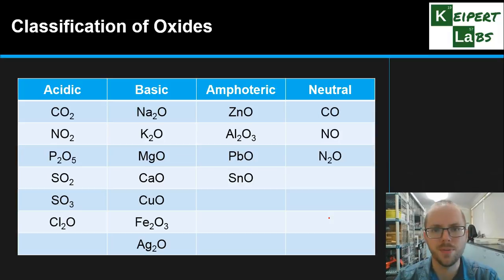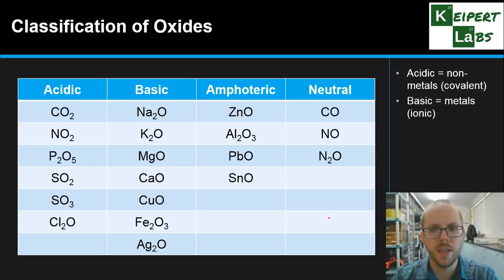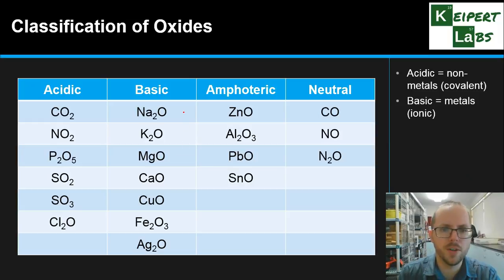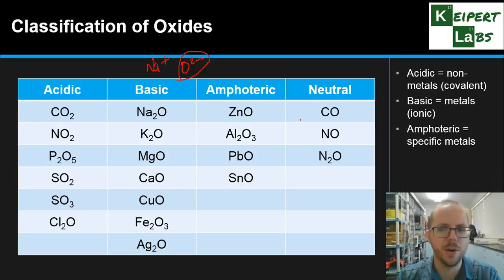Thinking generally about how we would classify — this is a list you can fill in the table at the bottom of your sheet. Generally speaking, acidic oxides are those that are non-metals combining with oxygen, meaning they are covalent compounds — carbon, nitrogen, phosphorus and other non-metals, when they combine with oxygen, form a covalent compound. Whereas when we're looking at basic compounds involving metals, those are ionic because of the formation of the oxide ion (O²⁻). For example, sodium oxide is the sodium ion plus the O²⁻ ion, and this oxide ion is what can behave as a base. Our four amphoteric examples are specific metal oxides, and our three neutral examples are specific non-metal oxides.